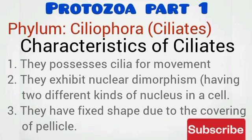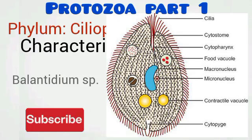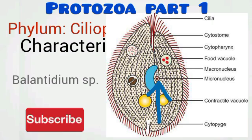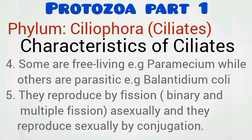Characteristics of ciliates: they possess cilia for movement which usually beat in a coordinated manner. There is nuclear dimorphism — that is, having two different kinds of nucleus in their cell. They also have a fixed shape due to the covering of pellicle. As you can see from the diagram of Balantidium species on the screen, you can see the cilia — the finger-like projections from the surface — and the two types of nucleus: the macronucleus (large) and the micronucleus (small). The external covering called pellicle gives them their fixed shape.